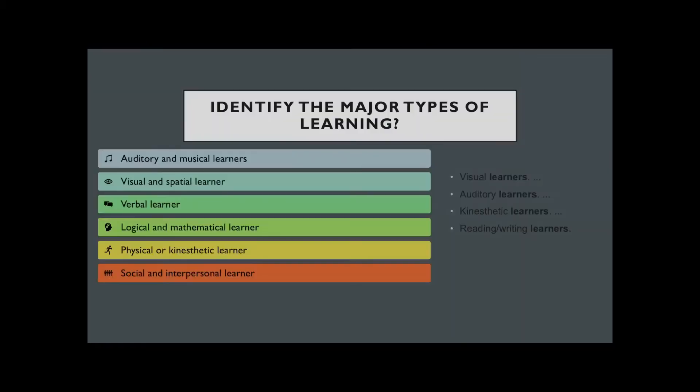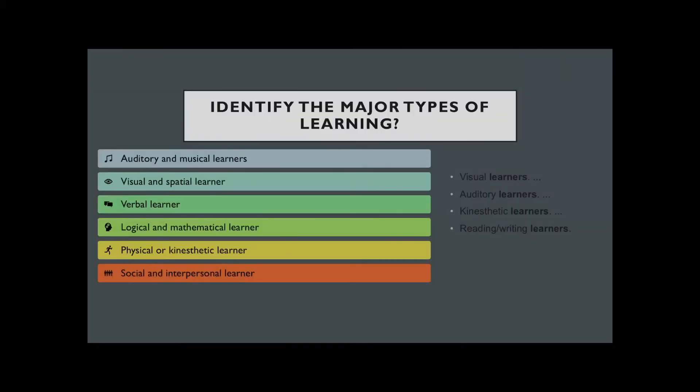I will identify the major types of learning: auditory and musical learners, visual and spatial learners, verbal, logical and mathematical, physical or kinesthetic, social and interpersonal. There are other types: visual learners, auditory learners, kinesthetic learners, and reading/writing learners.